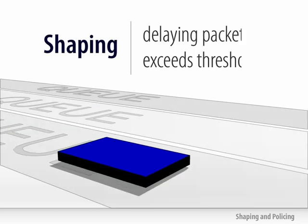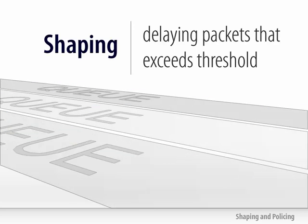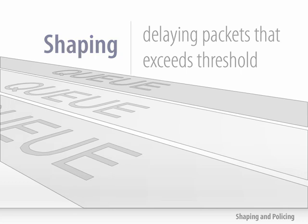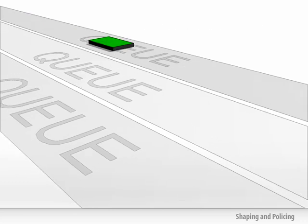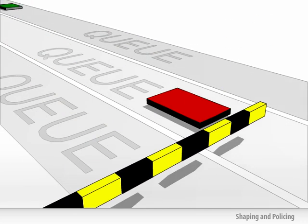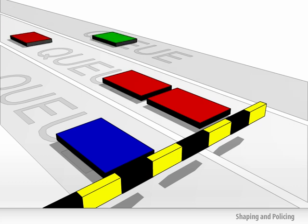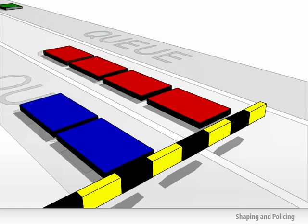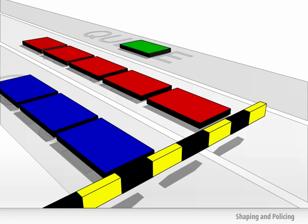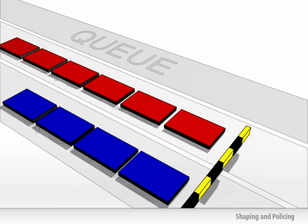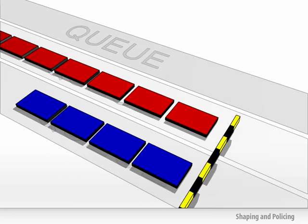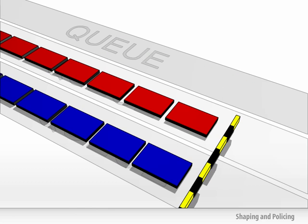Shaping involves delaying packets that exceed a certain threshold. These packets are held in the queue until a later time when they can be sent out. This has the effect of smoothing out bursts, but unlike policers, shaping will attempt to not drop packets in the process. If there is congestion or a large amount of traffic, however, the queues may overflow, causing dropped packets.